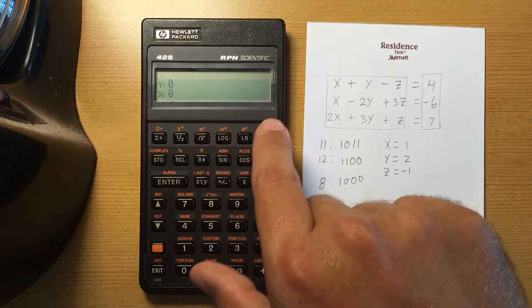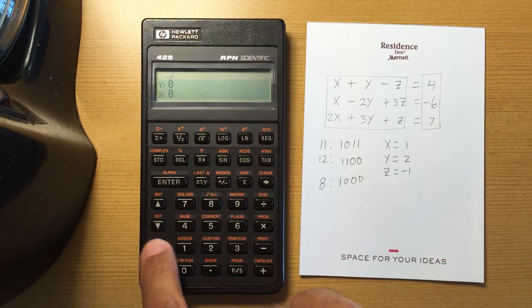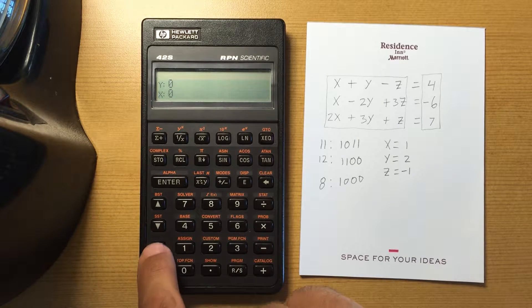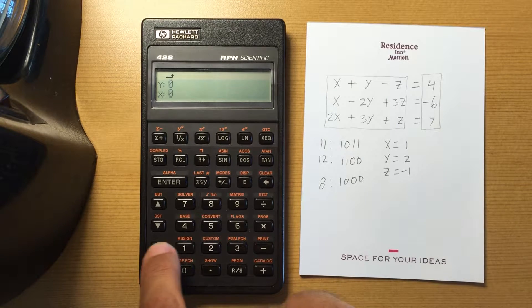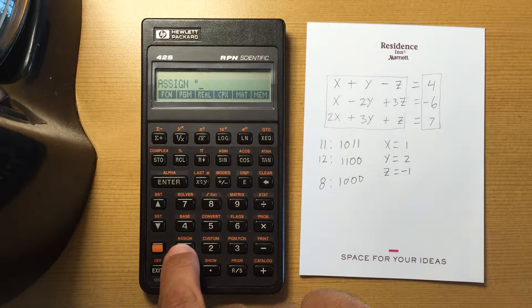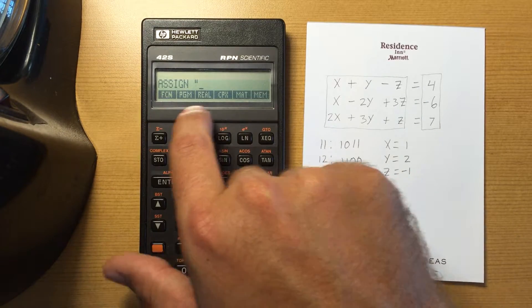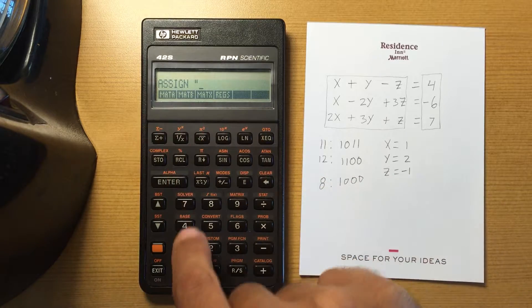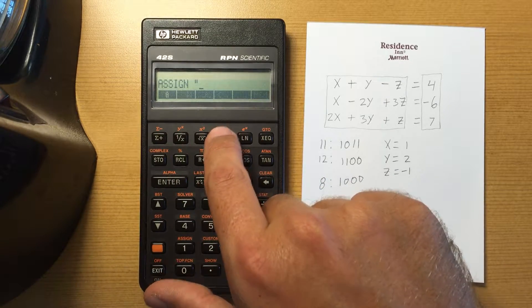But primarily I'm going to use my custom keys. So to assign something to a custom menu, you do shift and then assign. And this brings up your catalog so you can assign a matrix, you can assign a complex variable, assign real variables.